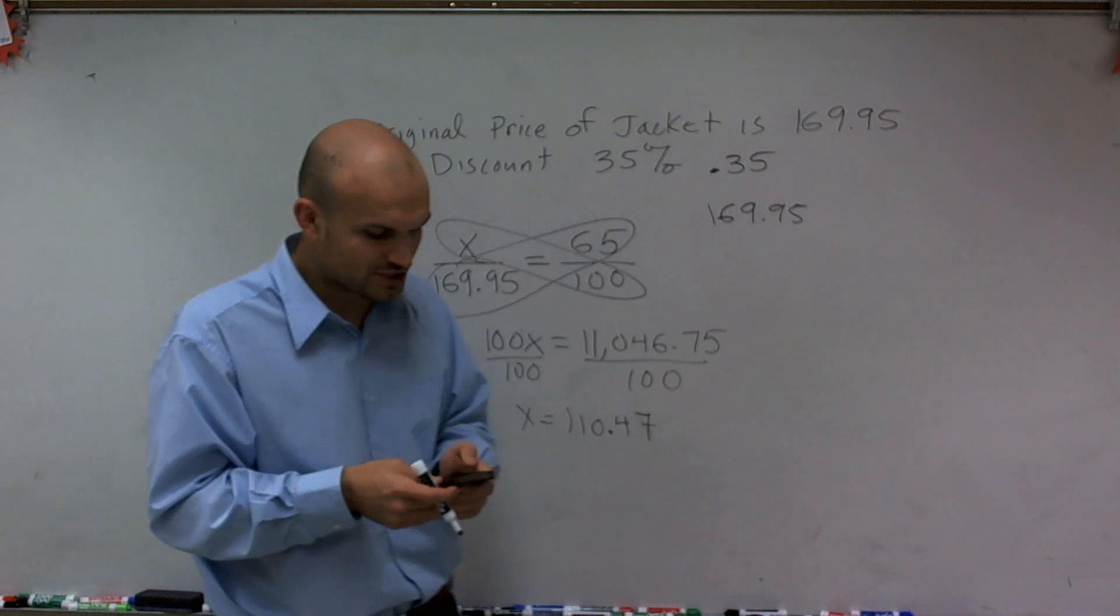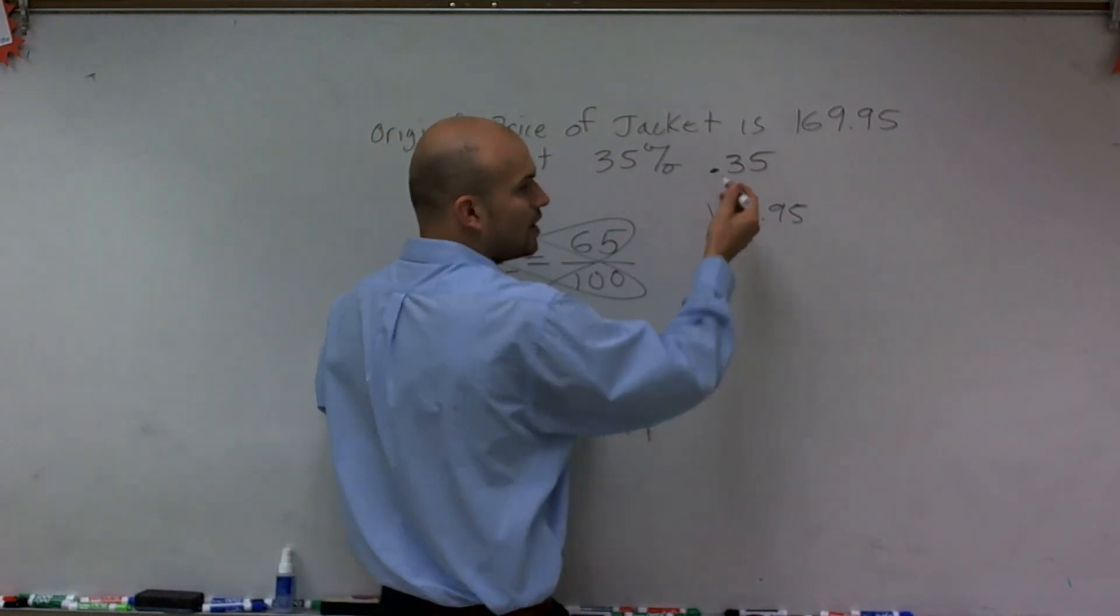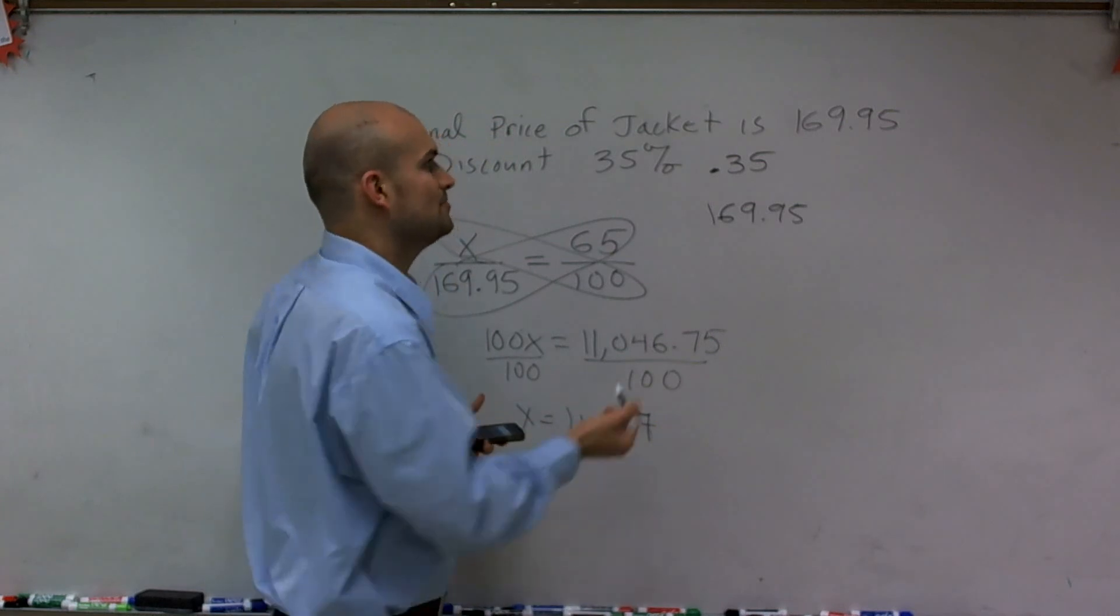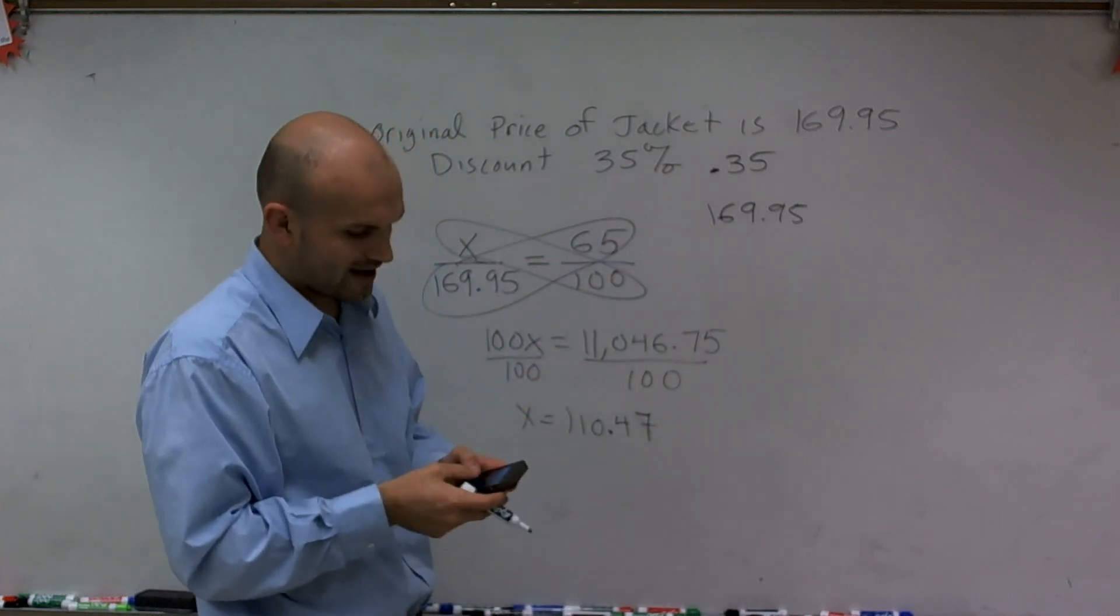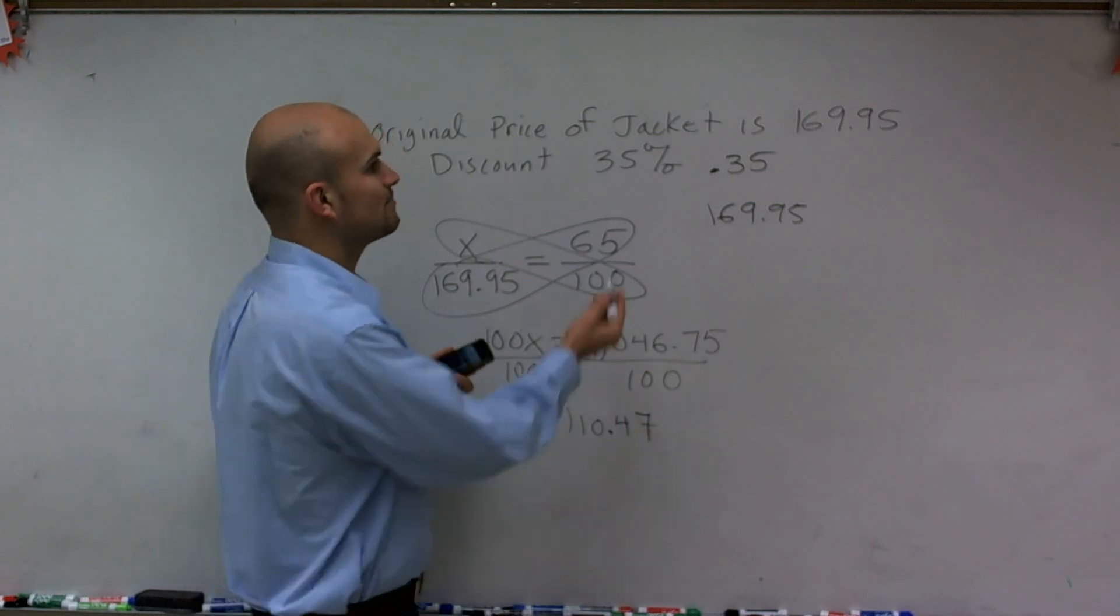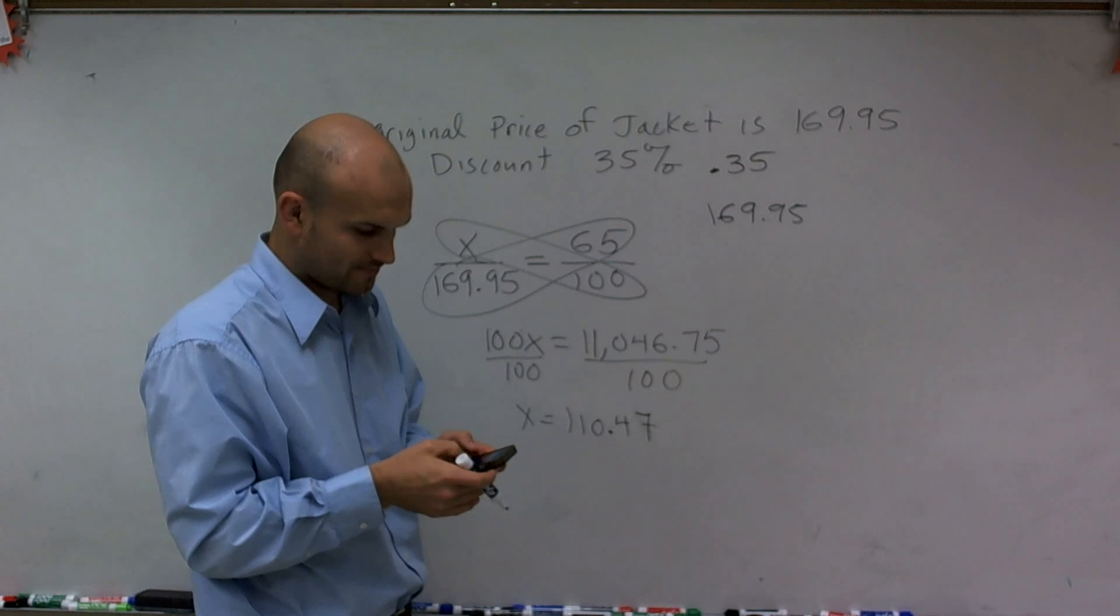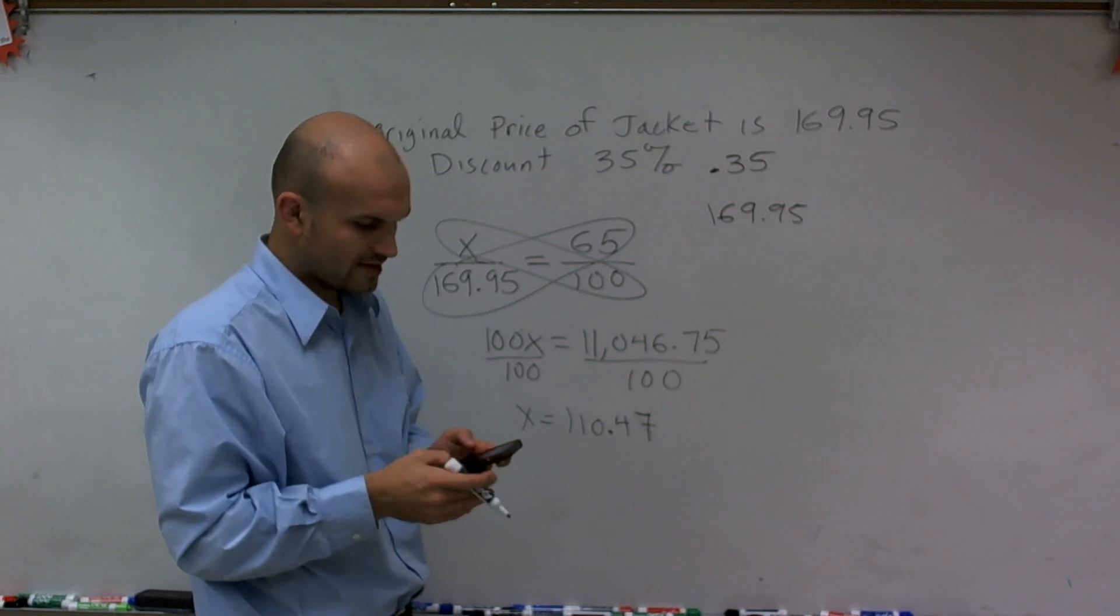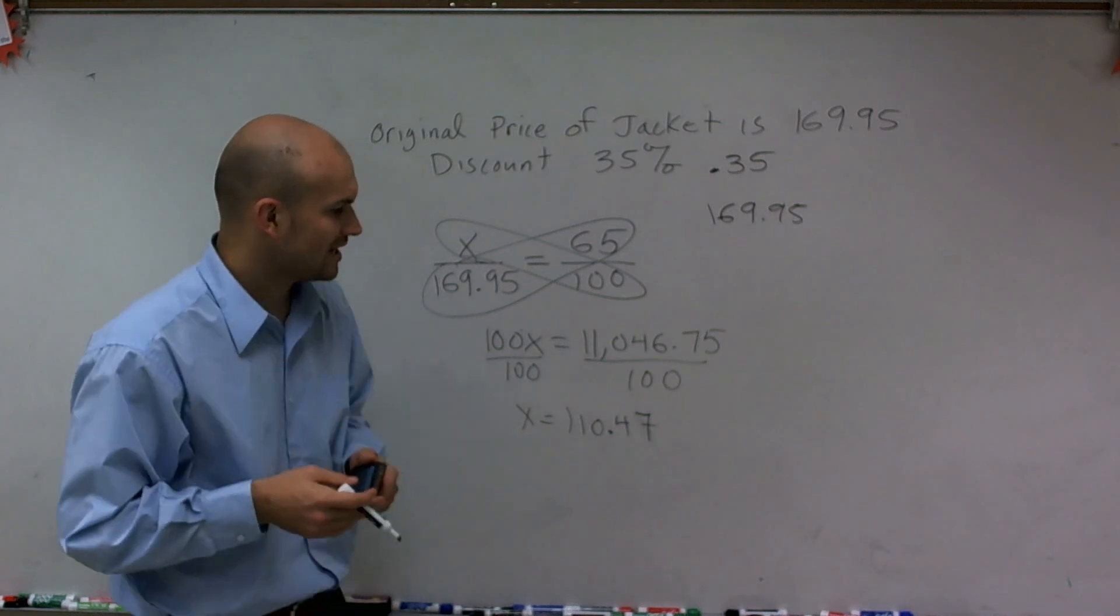The other way, which is a little bit more quicker to do, is if this is going to give you the amount discounted, let's just find what that unit price would be. So what I can do is take the total value, 169.95, and then multiply it by the percentage that we're going to have, which would be 65%, 0.65. Make sure you convert it to your decimal, and then again, what you get is $110.47.